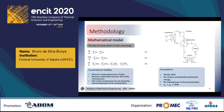The isentropic efficiency was considered 80% for both pump and turbine. Detailed calculations of pressure losses and heat transfer in the evaporator, recuperator, and condenser were ignored, since they depend heavily on the materials and design details of the heat exchanger, which is not the objective of this study.